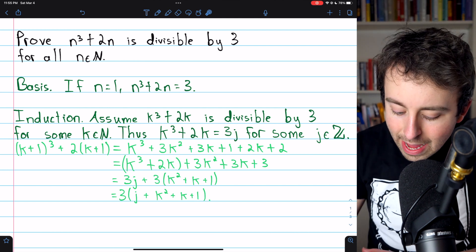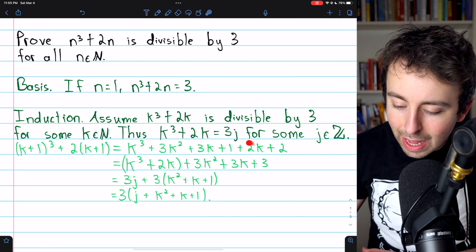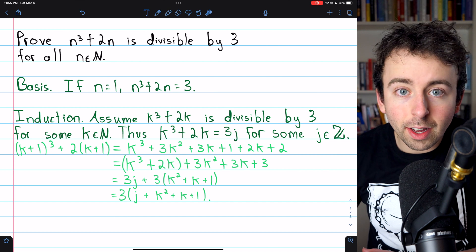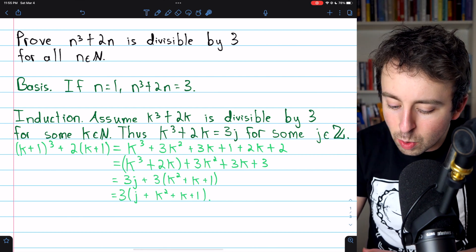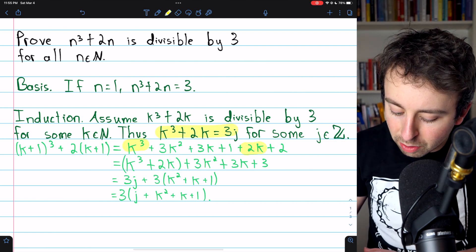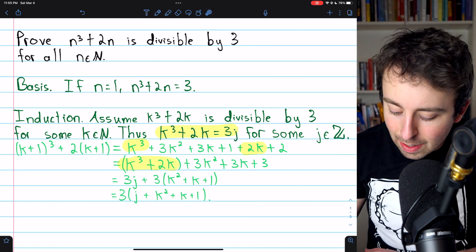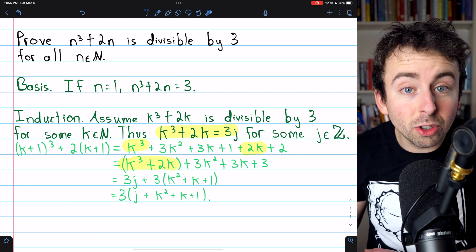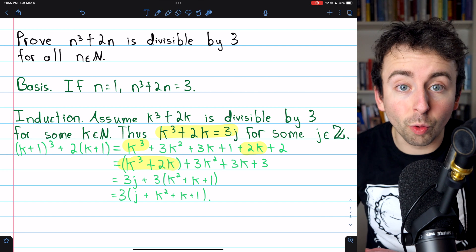What you should notice here is that we have a k cubed term and we have a plus 2k term. We should group those things together because by the induction hypothesis, we already know that k cubed plus 2k is divisible by 3. So we're going to take those two terms and bring them together. And what that leaves is 3k squared plus 3k plus 1 plus 2. So 3k squared plus 3k plus 3.